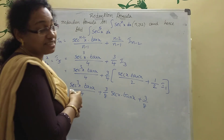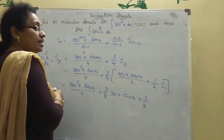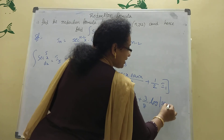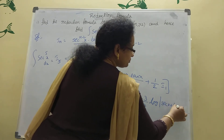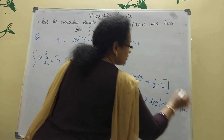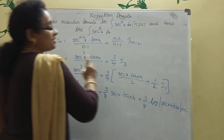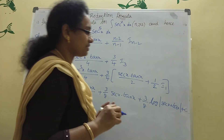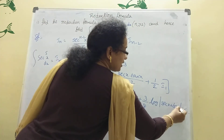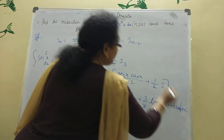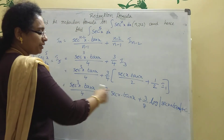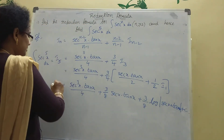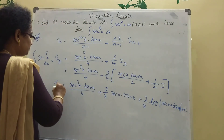I_1 is the integration of secant x, which equals log mod of (secant x plus tan x). So the integration of secant x is log of secant x plus tan x. Substituting I_1, we get the final value of I_5 with the term 3 by 8 into log of (secant x plus tan x), plus C. That is the complete answer for I_5.